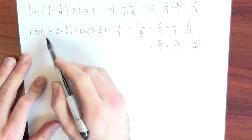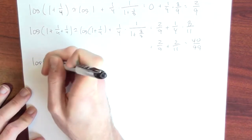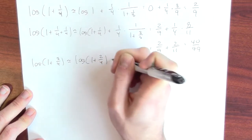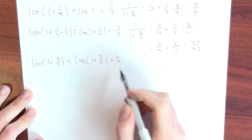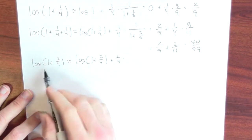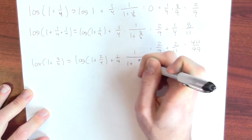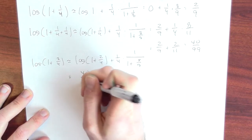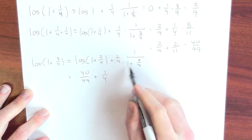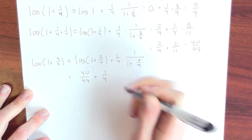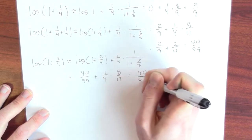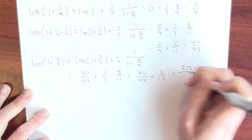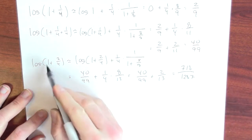So that's approximately log of 1.5. Now let's keep going. What's log of 1 plus 3/4? That should be about log of 1.5 plus 1/4 times the derivative evaluated at 1 plus 5/8. Log of 1.5 is approximately 40/99, plus 1/4 times — 1 plus 5/8 is 13/8, reciprocal is 8/13. So this is 40/99 plus 2/13, which turns out to be 718 over 1,287. And that's approximately log of 1.75.